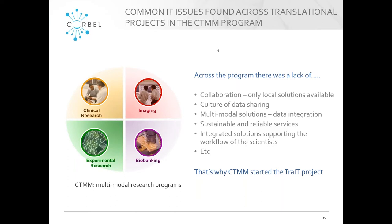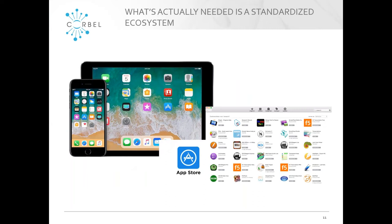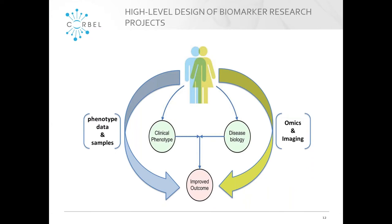That's where TRADE started. What you would like to have is something like what Apple and Google have organized in the mobile world — an ecosystem where you have different apps and different tools that collaborate and interact, but are not necessarily supplied by one single vendor. That's what we try to accomplish in TRADE. We made a high-level analysis of the process in these projects and saw the same process across disease areas — across cancer, cardiovascular — where in these biomarker projects, you see an outcome, a clinical phenotype, that you want to correlate to the underlying disease biology.